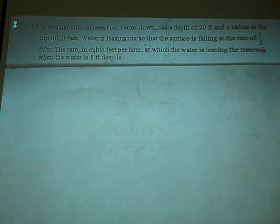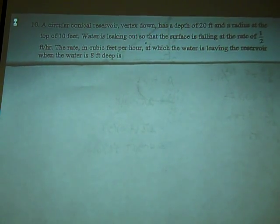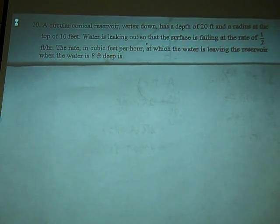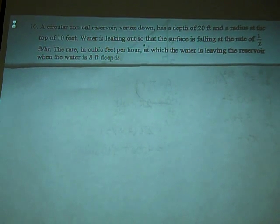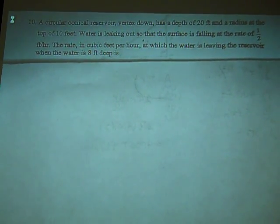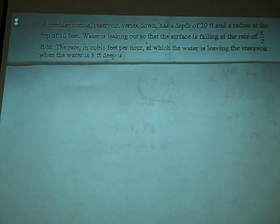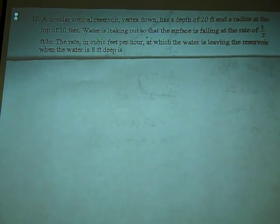The circular conical reservoir, vertex down, has a depth of 20 feet and a radius at the top of 10 feet. Water is leaking out so that the surface is falling at a rate of one half feet per hour. The rate in cubic feet per hour at which the water is leaving the reservoir when the water is 8 feet deep.